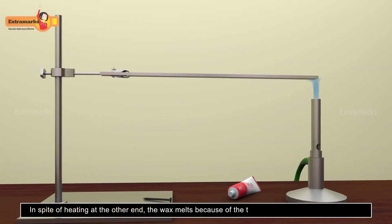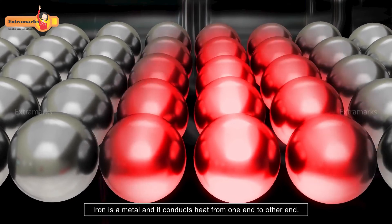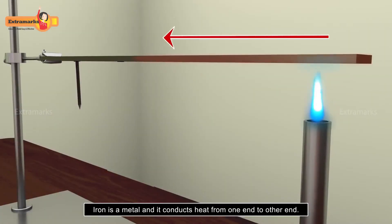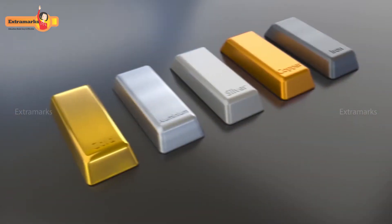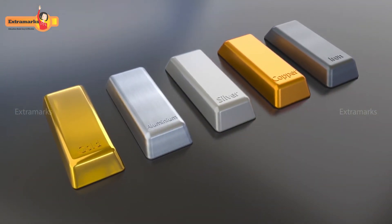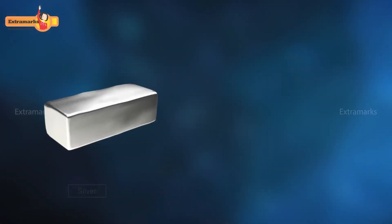In spite of heating at the other end, the wax melts because of the thermal conductivity of the iron rod. Iron is a metal and it conducts heat from one end to the other. From this activity we can conclude that metals are good conductors of heat and have high melting points.